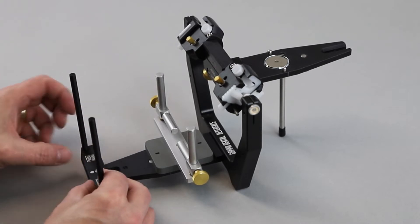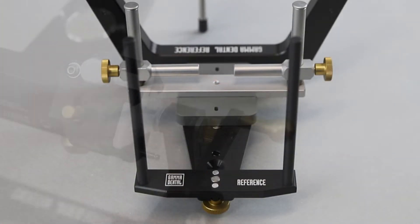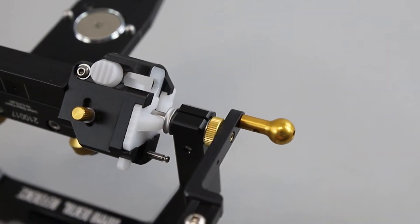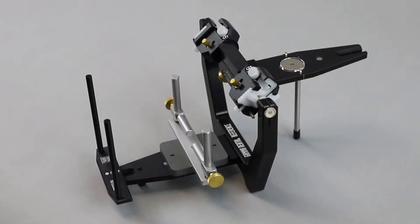The correct position of the face bow support is achieved when the labeling can be read normally. Pull apart the side arms of the reference AB face bow.